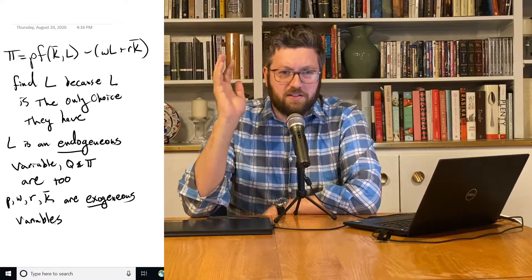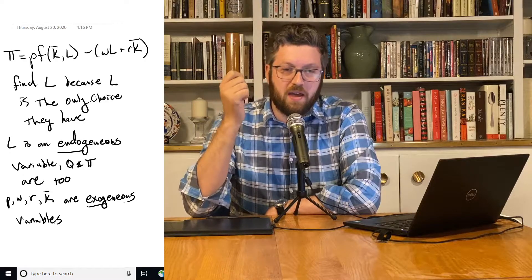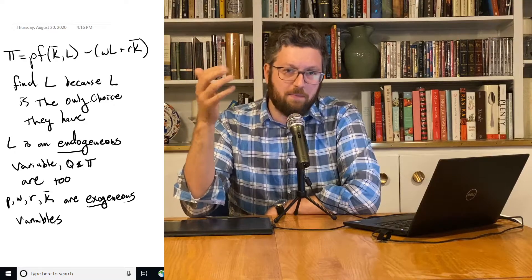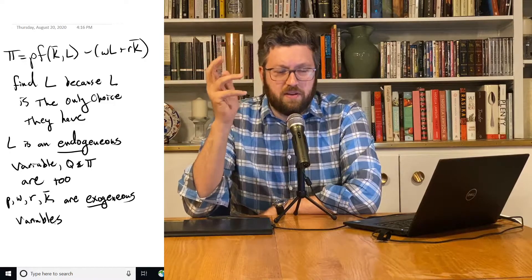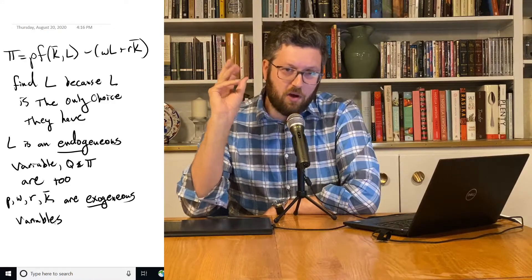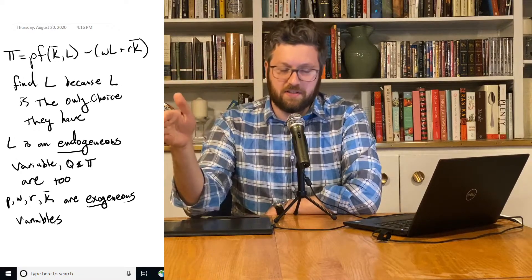And this distinction between endogenous and exogenous variables is something that's going to come up over and over again. It's labels we use to describe different variables. And don't be fooled in thinking that labor is always an endogenous variable. Q and pi or profit are always endogenous, and everything else is exogenous.